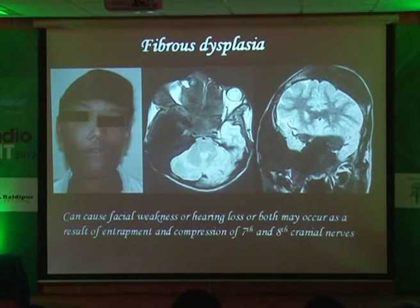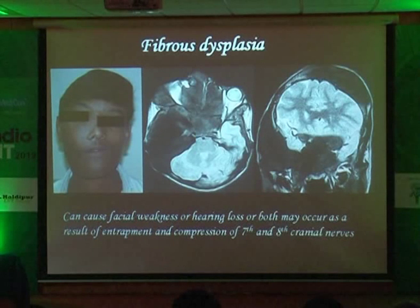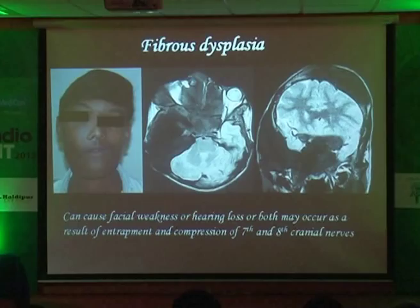Small take-home message: one — ice cream cone appearance means epitympanum. Two dots, two lines — mesotympanum. Nothing — hypotympanum. Next: look beyond the temporal bones, especially in cases of fibrous dysplasia.